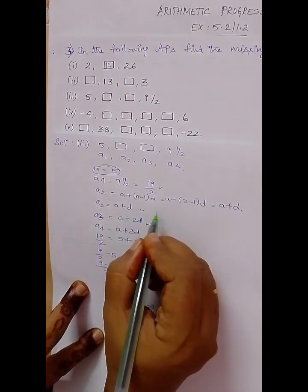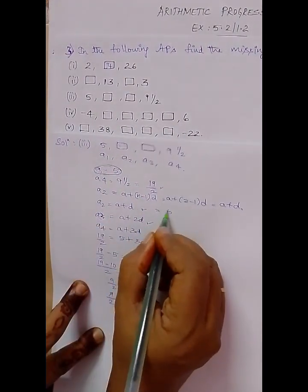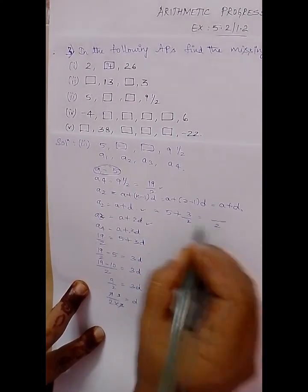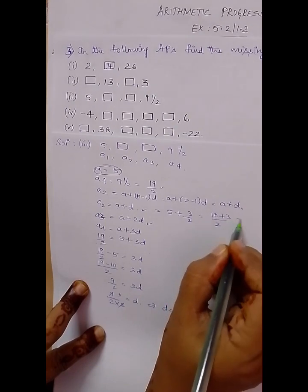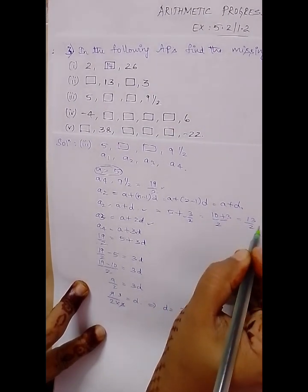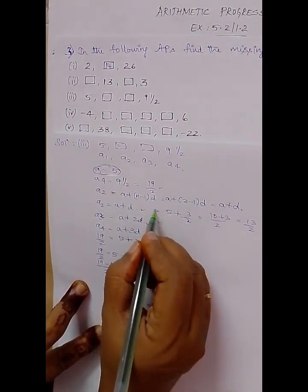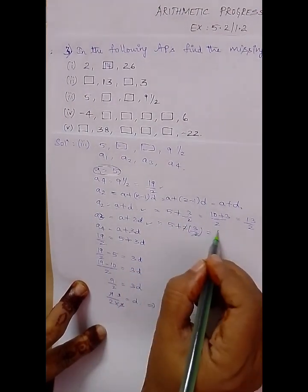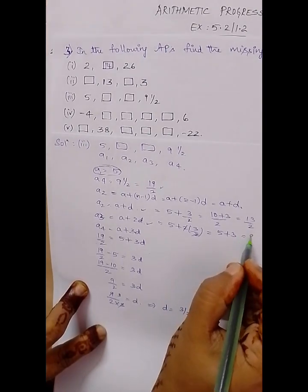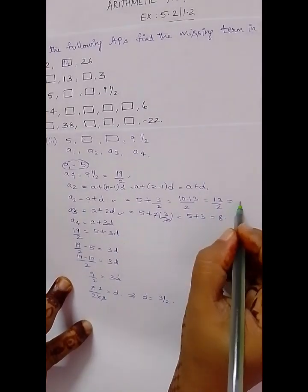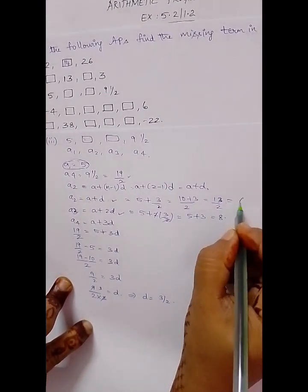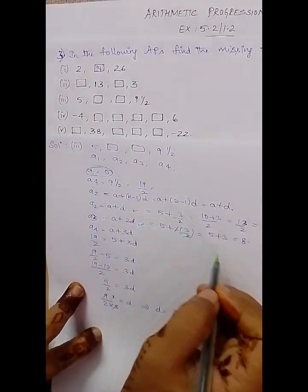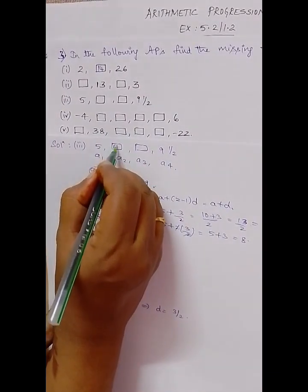Now substituting: a2 = a + d = 5 + 3/2. Taking LCM: (10 + 3)/2 = 13/2. And a3 = a + 2d = 5 + 2×(3/2) = 5 + 3 = 8. We can write 13/2 as the mixed fraction 6½. So we fill in the boxes with 6½ and 8.